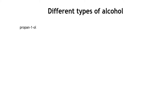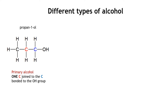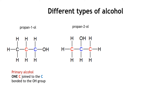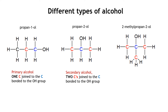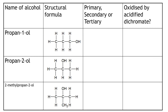Alcohols can be categorised into three groups. If you take propan-1-ol, we would call that a primary alcohol, because the carbon that is joined to the hydroxyl group is joined to one other carbon. If we take propan-2-ol, the carbon joined to the hydroxyl group is joined to two other carbons. We've got three alcohols shown in this table: propan-1-ol, a primary alcohol; propan-2-ol, a secondary alcohol; and 2-methylpropan-2-ol, a tertiary alcohol. The video shown next will show how each of the alcohols reacts with acidified dichromate.